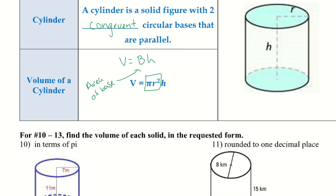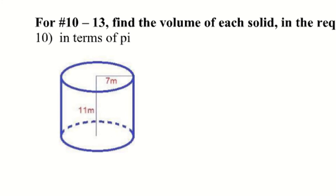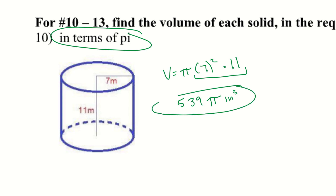Number ten asks for the volume in terms of pi. So V = π × 7² × 11. We leave pi in the answer, and plugging 7 squared times 11 into the calculator gives 539. The answer is 539π meters cubed.